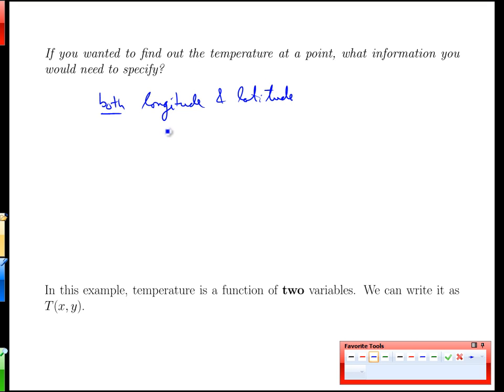What I'd need to specify is both the longitude and latitude. In that particular model, longitude looks an awful lot like an x-coordinate left to right, and the latitude looks like a y-coordinate up and down. What we would have then is a function that has two inputs, x and y.